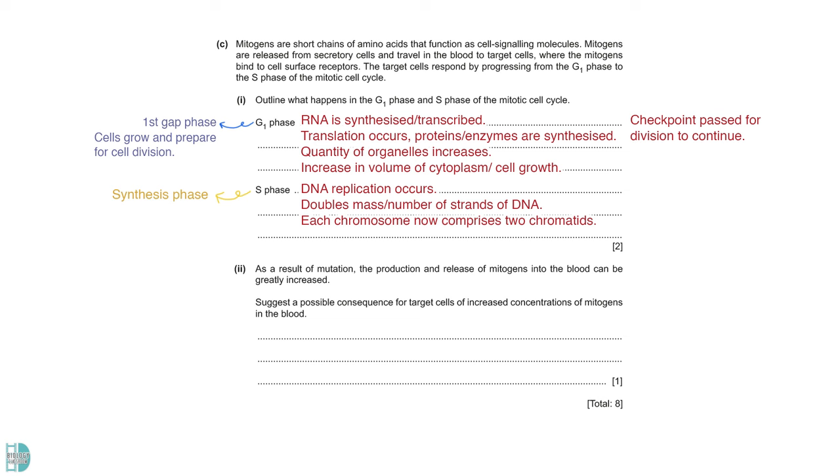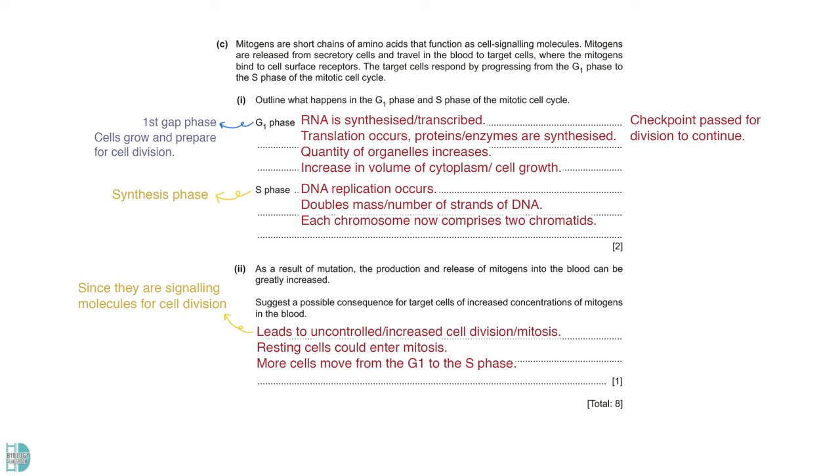Question 2 wants you to suggest a possible consequence for target cells of increased concentrations of mitogens in the blood. Since it is a signaling molecule for cell division, an increased concentration will lead to uncontrolled cell division or mitosis. Resting cells receive the signal and enter mitosis. There will be more cells moving from the G1 to the S phase.